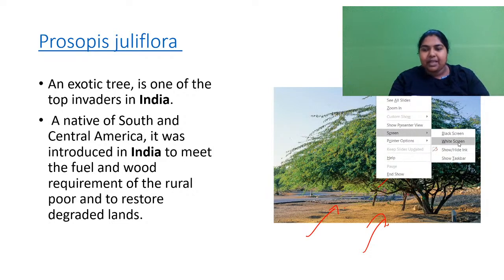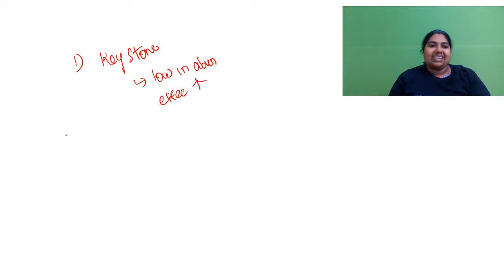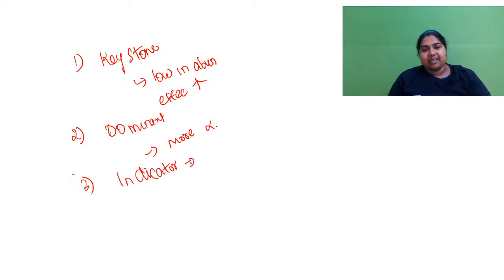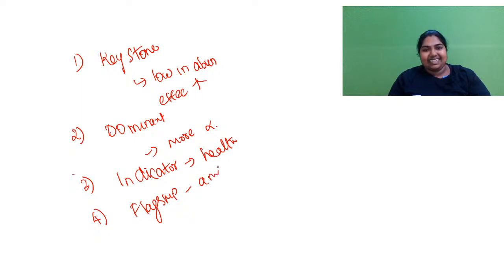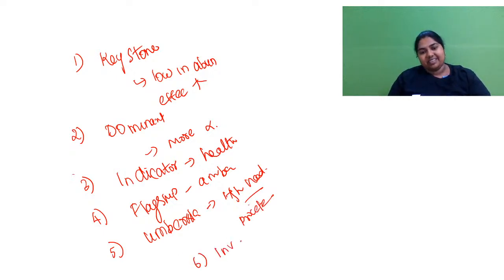Quick summary: Keystone species are low in abundance but the effect is more. Dominant species are more in number and the effect is proportionate to abundance. Indicator species tell about the health of the environment — lichens, tubifex worms, and others. Flagship species are like your ambassador — for example, the panda. Umbrella species have a very high need, and if that need is met, all others are protected. We also saw invasive species.